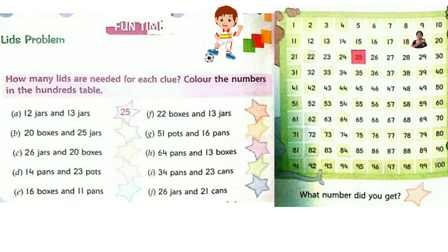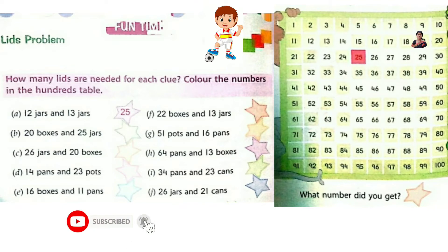The question is here and the 100's table is next to the questions. For question A: 12 jars and 13 jars — that is 25 leads. That has been done here.